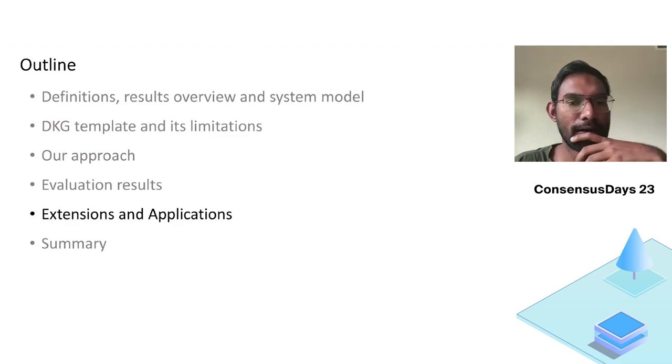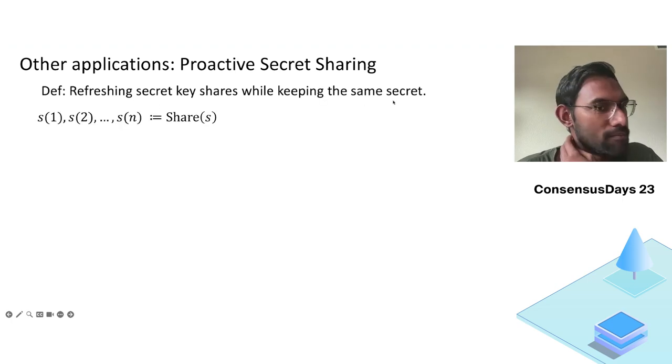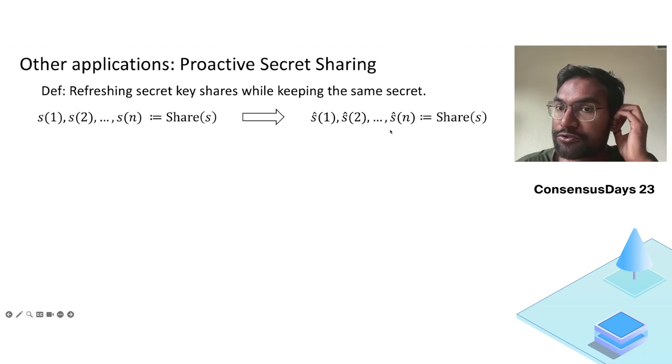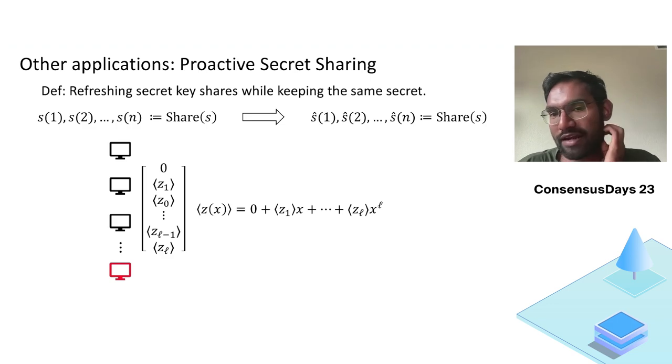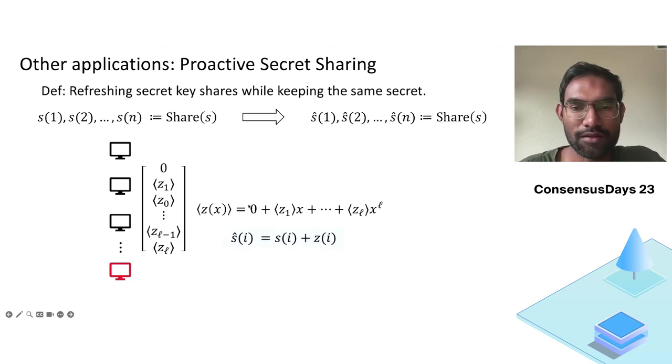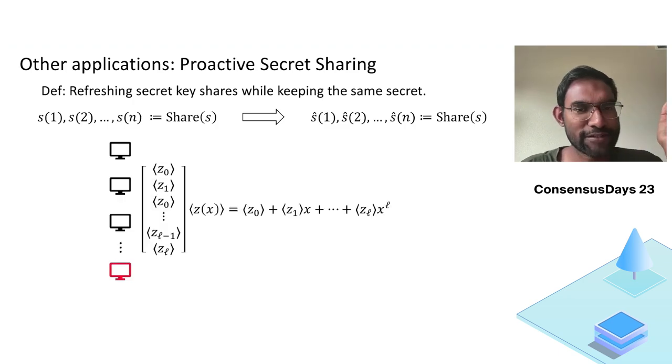I want to touch upon at least one extension. Let's look at proactive secret sharing. This is the idea that you want to refresh the key shares while keeping the same secret. So let's say we started with shares of s, which are s1 of these left values, but we want to end up with a new set of shares. These are new shares of the same secret. How do you do this? You generate a random polynomial, but you generate the random polynomial slightly more carefully where everybody uses a default zero as the constant term of this polynomial. Then each party, after receiving z(i), can update their own share by summing their share. The correctness is straightforward. If s was evaluated at zero, it will be s evaluated at zero, which is the same secret. The idea is to use the same default zero value as the first constant.